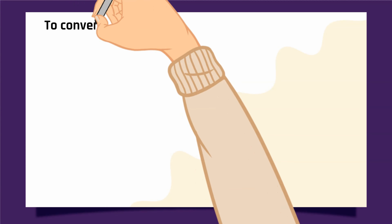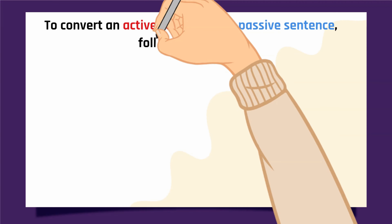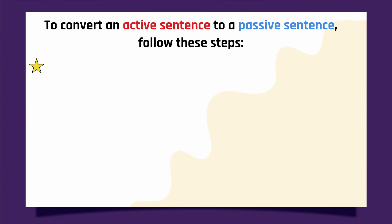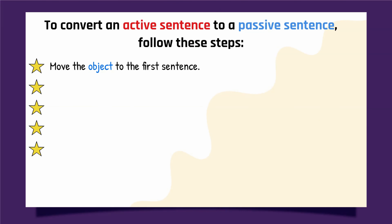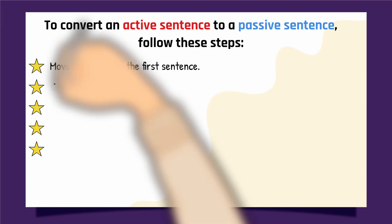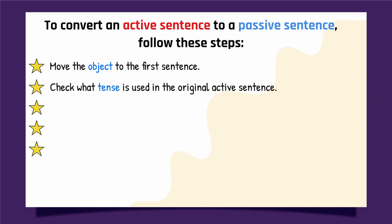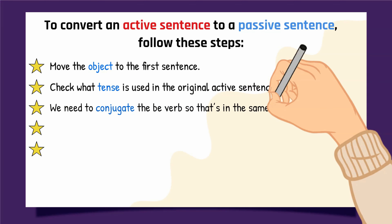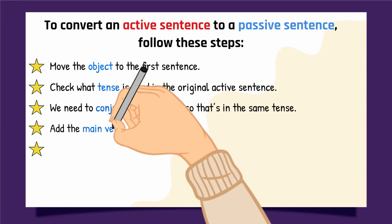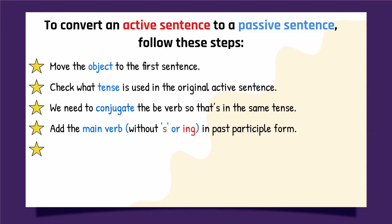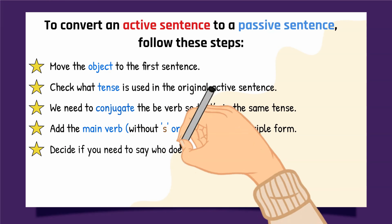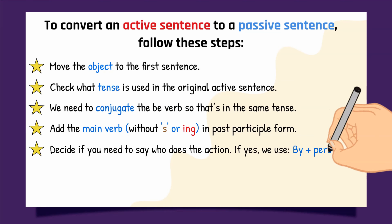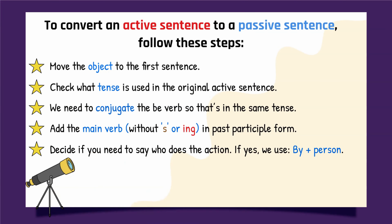To convert an active sentence to a passive sentence, follow these steps. Check what tense is used in the original active sentence. We need to conjugate the be verb so that it is in the same tense. Add the main verb, without 's' or 'ing', in past participle form. Decide if you need to say who does the action — if yes, we use 'by' plus person.